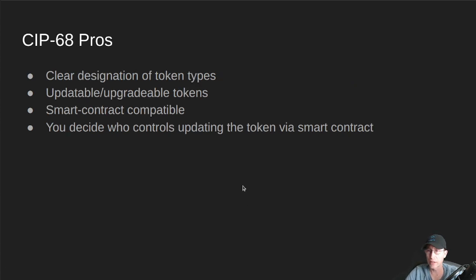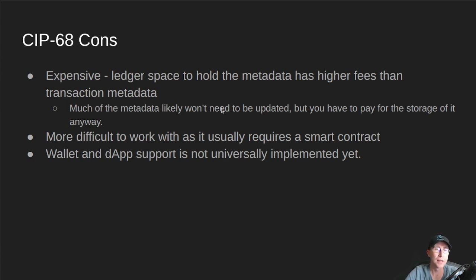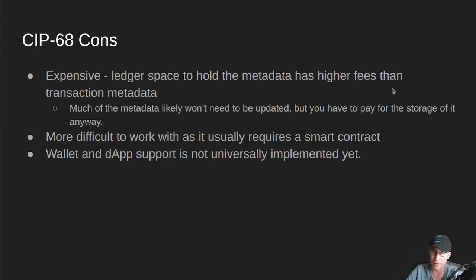CIP68 pros: there is a clear designation of token types, which makes things easier for wallets to categorize your tokens. You can have updatable or upgradable tokens. They are smart contract compatible, and you can do advanced things like decide who controls updating of the token via smart contract. Some of the cons: it is expensive. Using ledger space to hold this metadata has higher fees than transaction metadata. If I wanted to create a fairly rich NFT, I'm going to be spending about six and a half ADA to put that token on the blockchain — quite a bit more expensive.